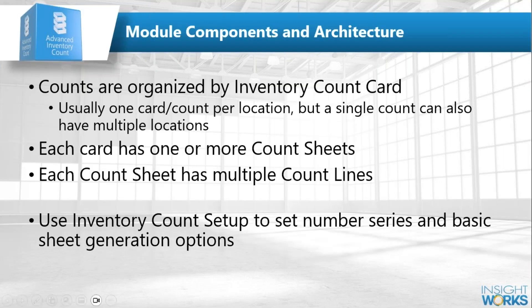Now let's get into more detail on setup. Typically it's one count card per location within Business Central — per warehouse location. You can have a count card reference multiple locations, which is useful if you have a main warehouse location plus virtual warehouses for scrap or return-to-vendor. That lets you reconcile them together — for example, seeing you're short 50 in your warehouse but have an extra 50 in scrap, making reconciliation easier.